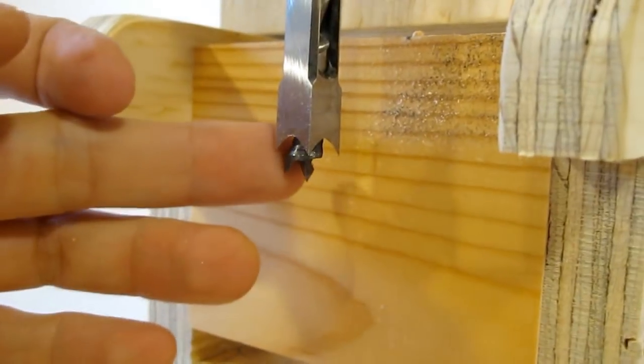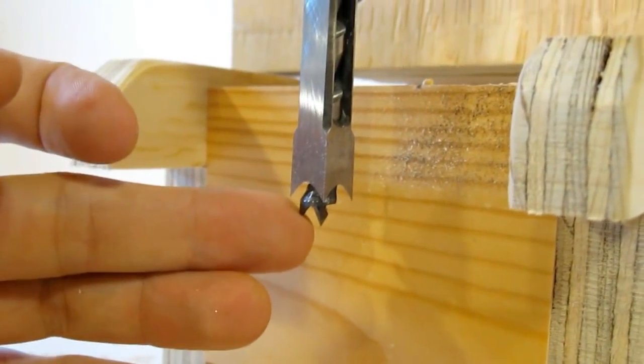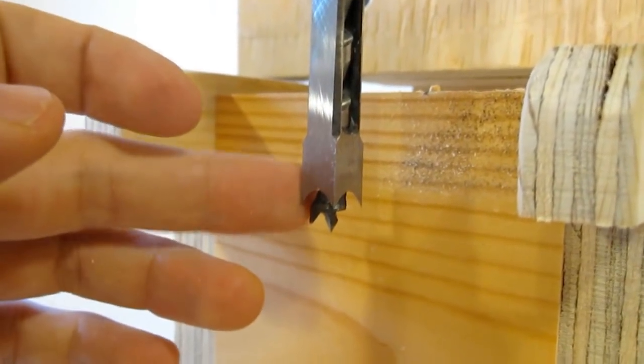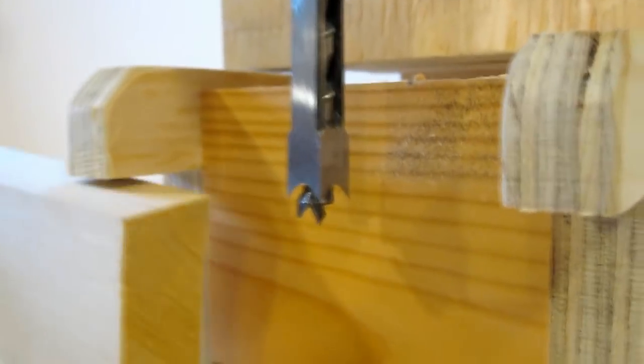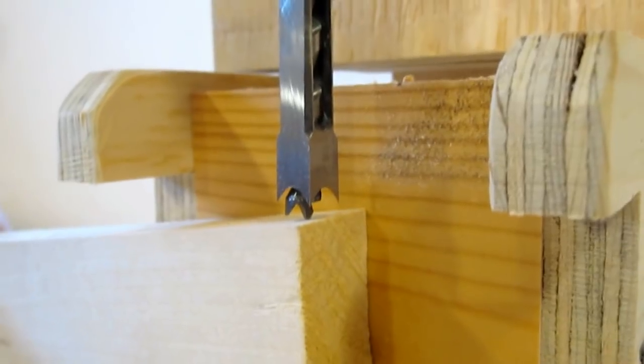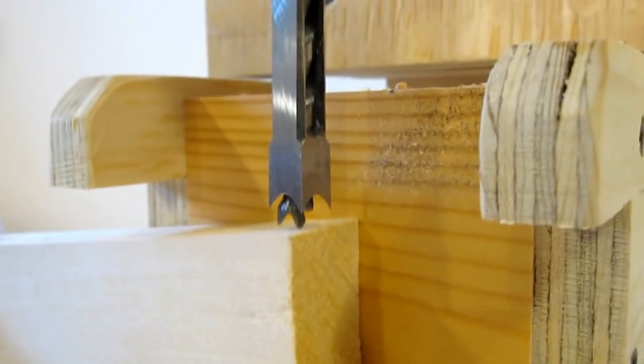Because these hollow chisel mortising chisels, the drill that goes into here is not meant to rub against the actual chisel itself. It needs to protrude. And I need to protrude it an extra little bit so that when the wood pushes it up, it still doesn't ram into the chisel.